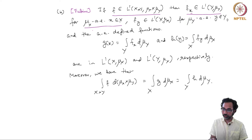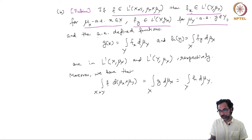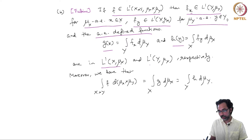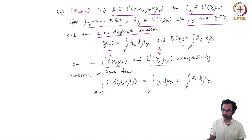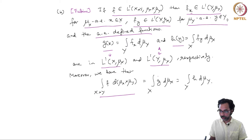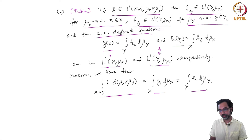Similarly, f_y belongs to L1(x, mu_x) for mu_y almost everywhere y in y. The almost-everywhere-defined functions g(x) and h(y), which are the integrals of f_x and f_y, are in L1(x) and L1(y) respectively. So g belongs to L1(x) and h belongs to L1(y), and we again have the formula that the integral with respect to the product measure equals the integral of g and equals the integral of h. This is the generalization of Tonelli's theorem for L1 functions on the product measure space.